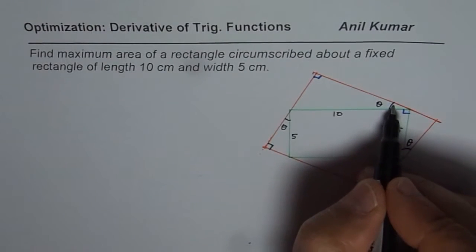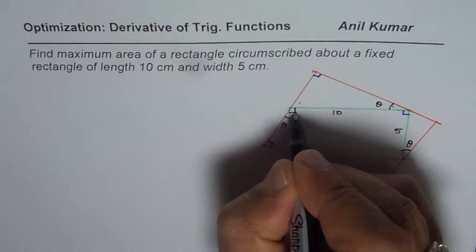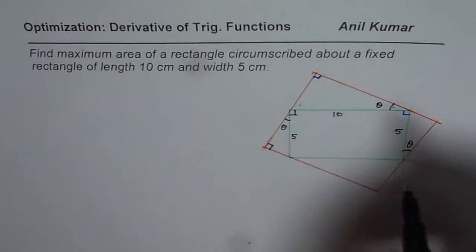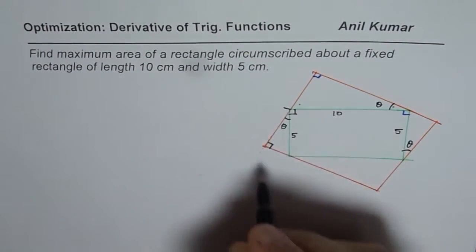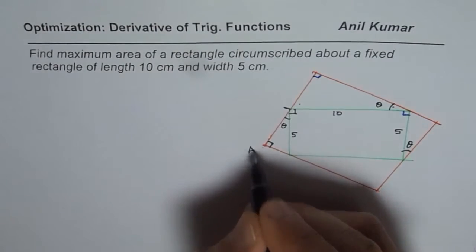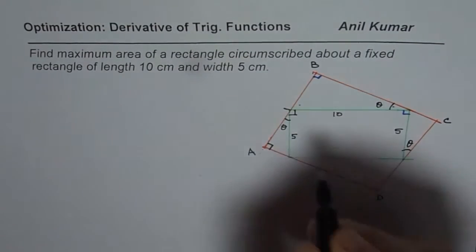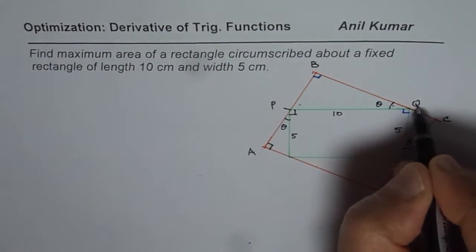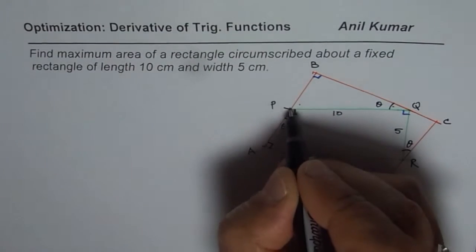If this angle is theta, then that angle is 90 minus theta, and here we have 90 degrees, so that angle has to be theta. Let us say this is the width of the rectangle. Let me label the corners as A, B, C, D and these points on the sides as P, Q, R, S.